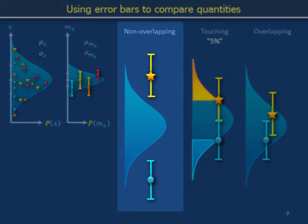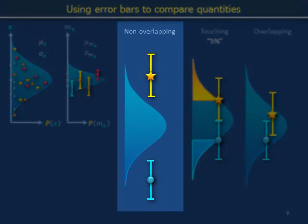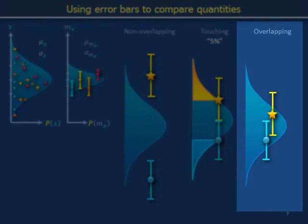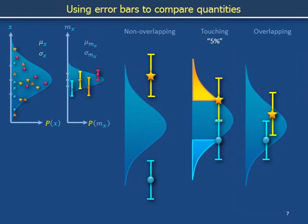When error bars do not overlap, it's hard to believe that data points came from the same distribution. When error bars overlap tightly, it's plausible that one same distribution is the source of both data points. These error bars are merely estimates of the width of a standard deviation of a distribution of sample means, so they can fluctuate and might not always accurately represent the actual distribution of sample means. This is why we have placed scare quotes around the 5%, to give a feeling of uncertainty.